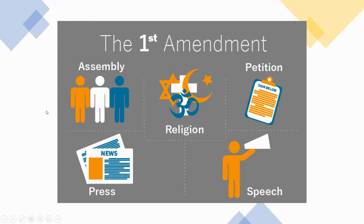We have the freedom to assemble, so we can gather and talk about anything. You can gather and go bowling with your friends, talk about any subject, or assemble with other like-minded people. You also have the freedom of religion — you can practice any religion you want, or you can practice no religion if you want. The beauty of the First Amendment is that these freedoms give you the freedom to do something and also the freedom not to do it.